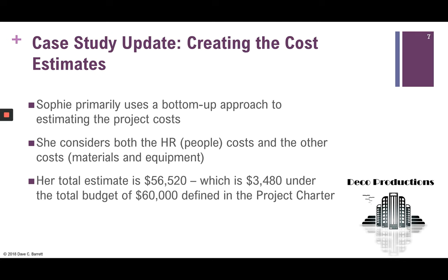The total estimate is $56,520, which is $3,480 under the total budget of $60,000 defined in the project charter. This is a good news scenario — we are under the $60,000. If it had been over the $60,000 budget, that would require a discussion with the project sponsor. In this case, we are just under $3,500 under budget in terms of our plans.